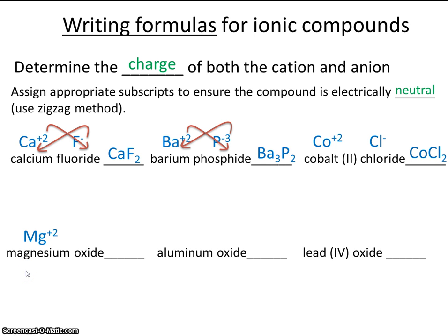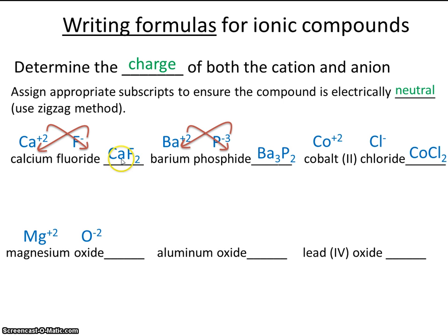Magnesium oxide — write the symbol and the charge for each. I encourage you not to go straight from the words to the formula, but start by writing the symbol and the charge. If you're not getting problems correctly, write the symbol and charge above the words — it helps accomplish this in a scaffolding fashion, looking at it in smaller steps. The ratio here: if we zigzag a 2 and 2, that's a ratio of 2 to 2, which reduces to 1 to 1. So it's just MgO — for every one magnesium, we have one oxide.